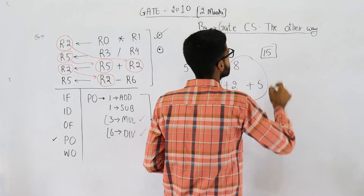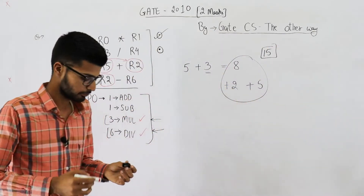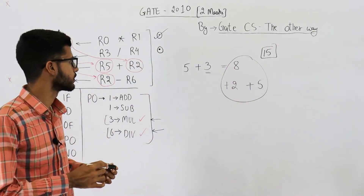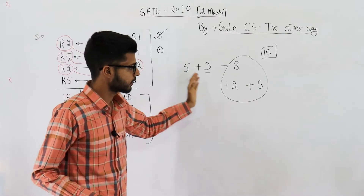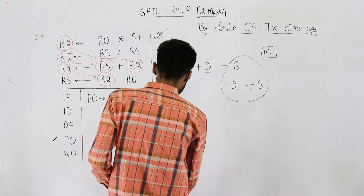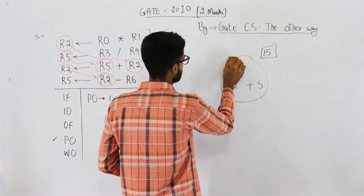The total is 8 plus 2 plus 5 equals 15 clock cycles. That's the answer using the shortcut method. Now I'll draw the pipeline diagram and explain the traditional method as well.